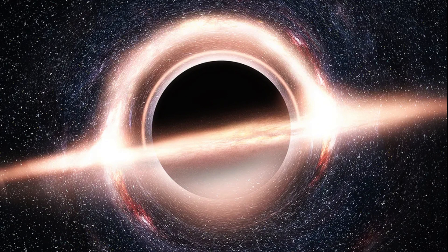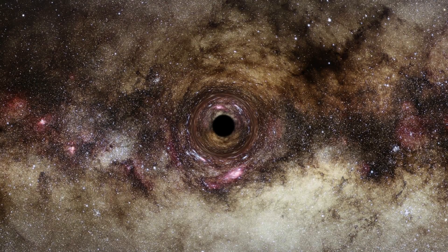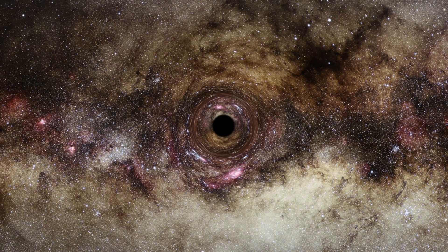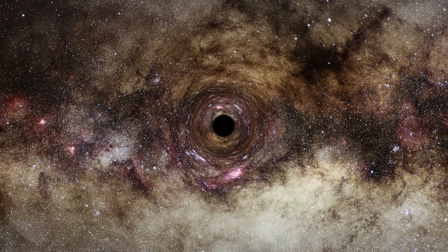Surrounding the event horizon, there may be an accretion disk composed of gas, dust, and other matter spiraling into the black hole. The immense gravitational forces generate intense heat and radiation, making the accretion disk one of the brightest objects in the universe.